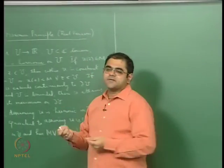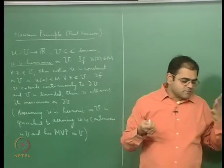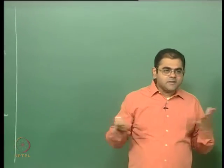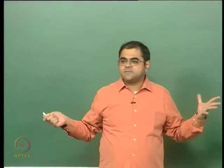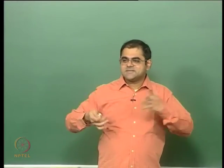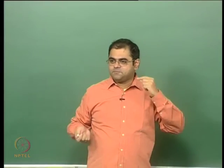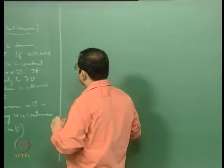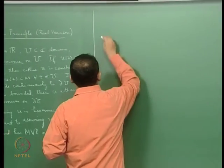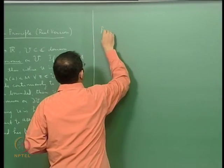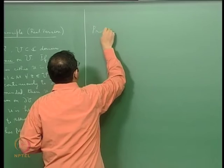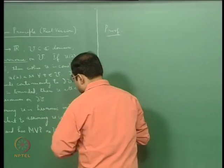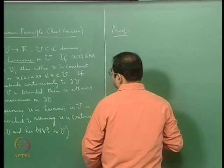The maximum principle applies to any continuous function which has the mean value property, because this is the same as being harmonic. The proof is pretty simple — it of course uses the mean value property.